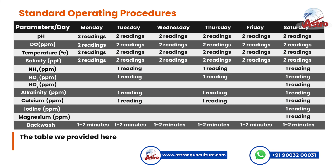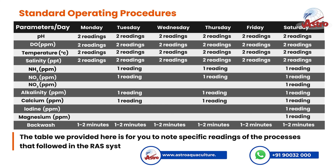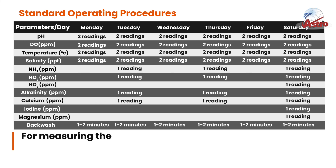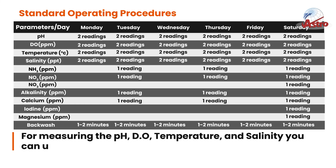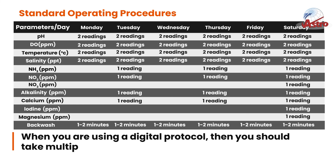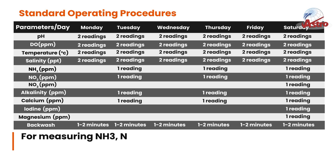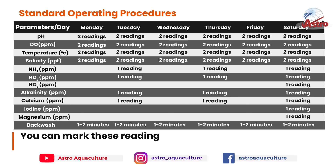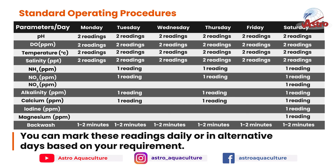Standard Operating Procedures: the table provided here is for you to note specific readings of the processes followed in the RAS system. For measuring pH, DO, temperature, and salinity you can use a test kit or digital protocol. When using a digital protocol, you should take multiple readings a day for accuracy. For measuring NH3, NO2, and NO3, we are usually using a chemical test kit. You can mark these readings daily or on alternative days based on your requirement.